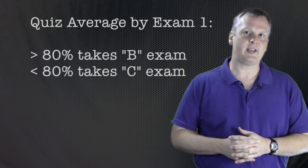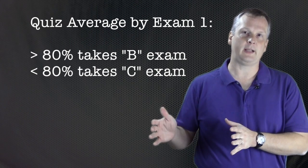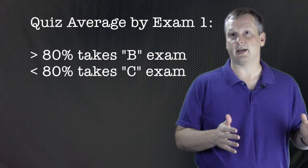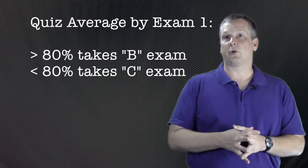If by the first exam your quiz average is at 80%, that qualifies you for the B level test. If your quiz average is below 70%, that qualifies you for the C level test. We have four tests in the course of the semester.